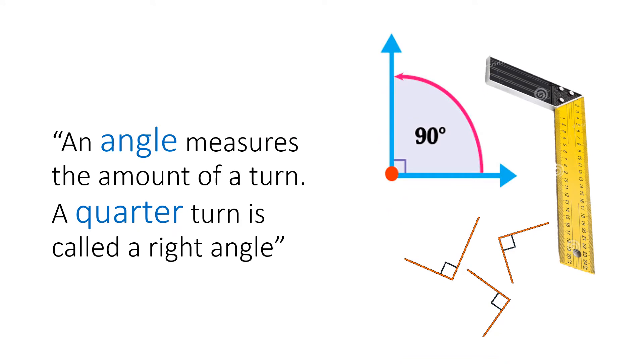An angle measures the amount of a turn. A quarter turn is called a right angle. An angle is formed between two intersecting lines. We measure angles in degrees, so this L-shaped angle is called a 90-degree angle or a right angle.